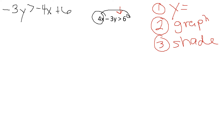Hopefully that sounds familiar. Y equals MX plus B — my X term needs to be first. So to start solving for Y, pretend your inequality symbol is an equal sign. The only thing that changes when you're solving for Y is if I divide by a negative coefficient, the direction of my inequality switches. So I have to get rid of this 3 here.